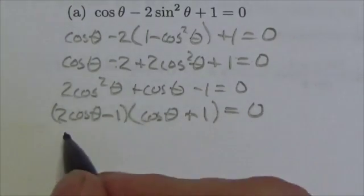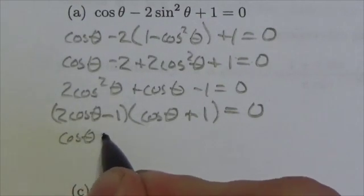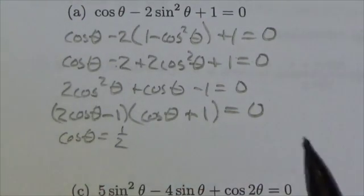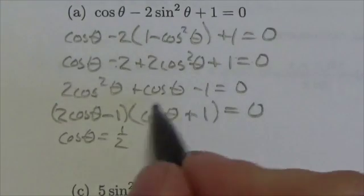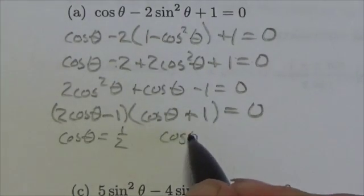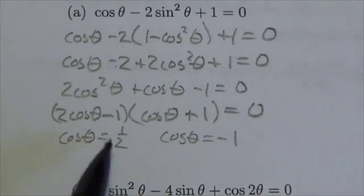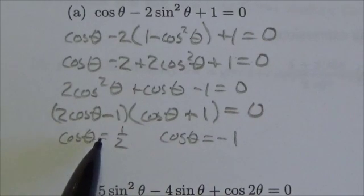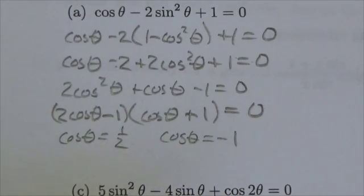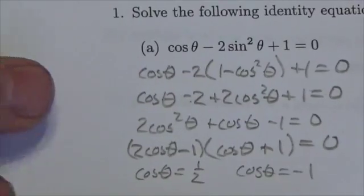If this is true, then cosine of theta must equal a half. If this is true, then the cosine of theta must equal negative 1. Now, let's think about this. Cosine of theta is equal to positive 1 half. Well, what two quadrants is cosine positive in? Well, let's just draw it over here.